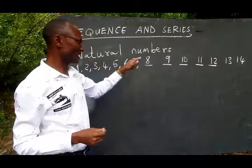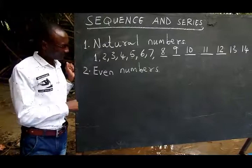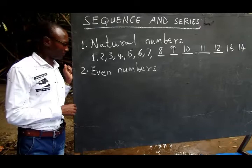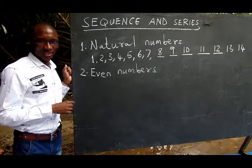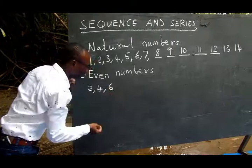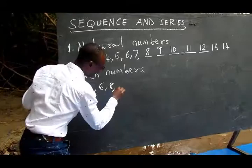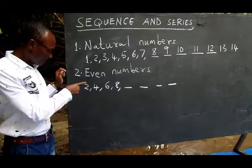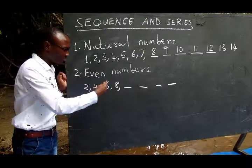Like this my best friend, another example of sequence and series is even numbers. Even numbers also are in sequence because we can get the next number easily. Even numbers, my best friend, are numbers which can be divisible by 2 without leaving a remainder. For example: 2, 4, 6, 8, and so on. There are so many even numbers in the world. If you look properly, there is a fixed number which is used to add to get the next number.